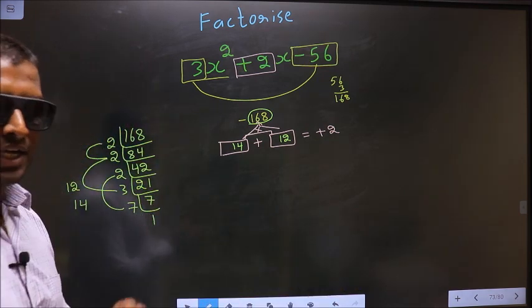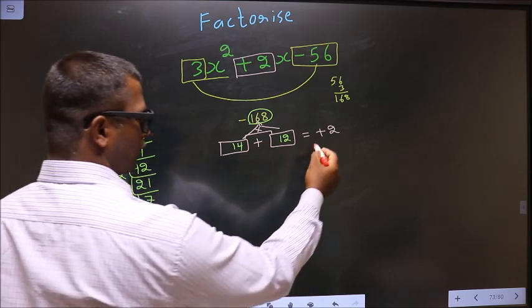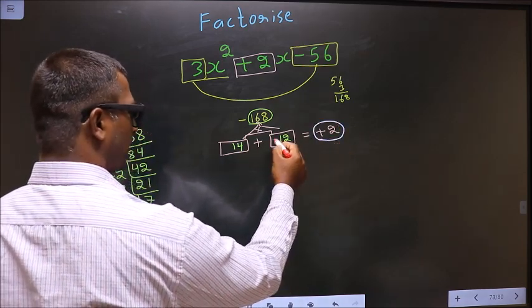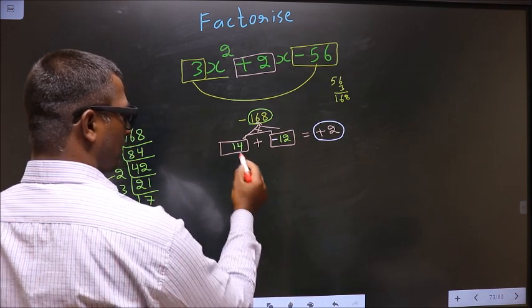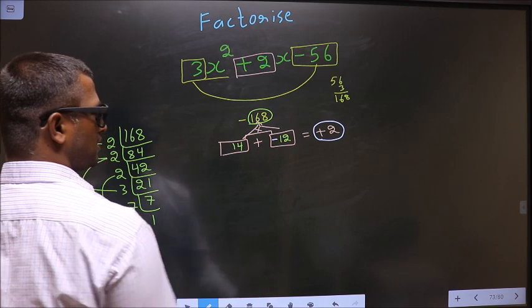Now we adjust the signs. To get +2, we put a negative sign before 12. So 14 - 12 = +2, and 14 × (-12) = -168. The signs are adjusted.